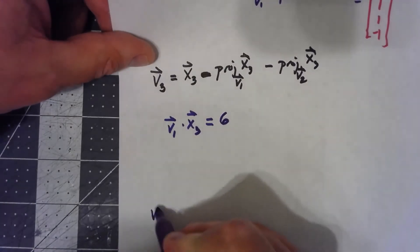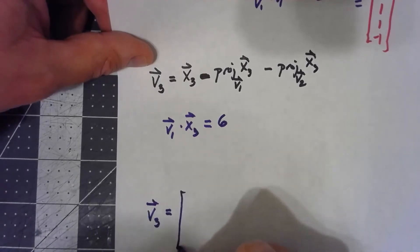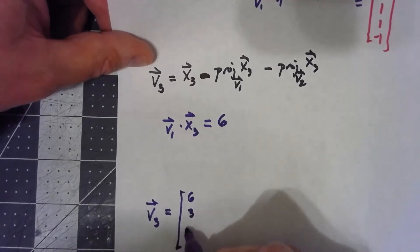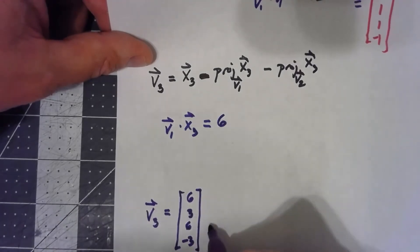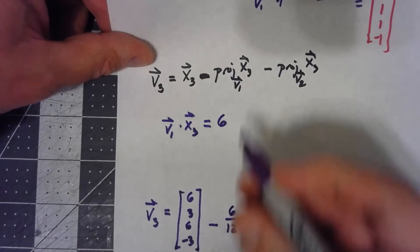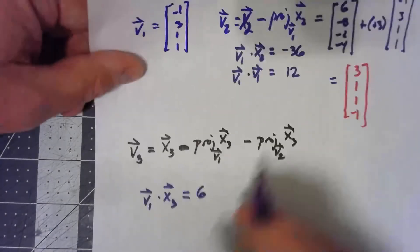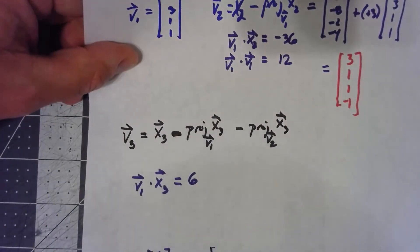So right now I have v3, I've got, it starts with x3, it starts with the 6, 3, 6, negative 3, minus 6 twelfths, the dot product we had here, over v1 dot v1, times v1.